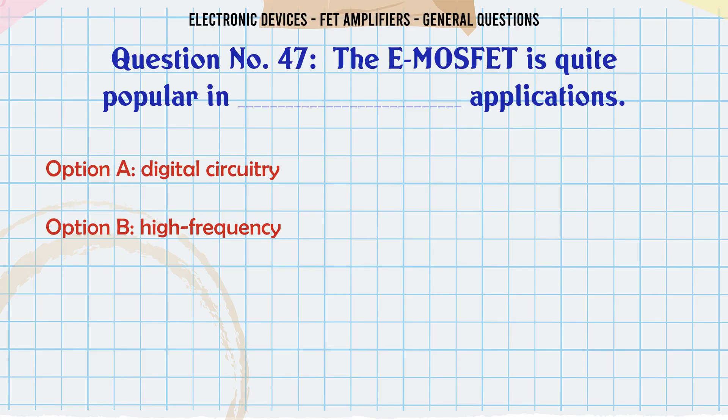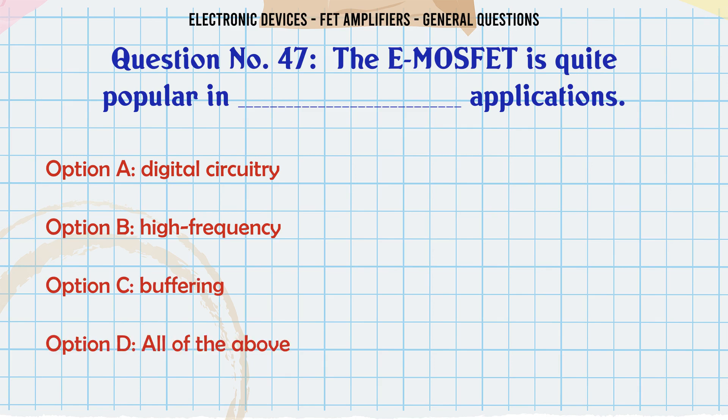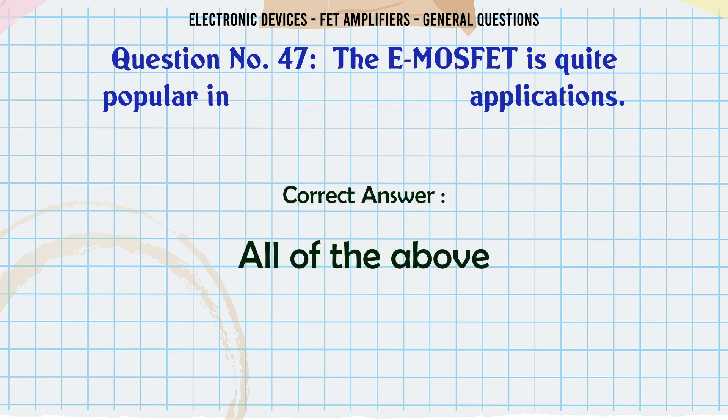The D-MOSFET is quite popular in which applications? A. Digital circuitry. B. High frequency. C. Buffering. D. All of the above. The correct answer is all of the above.